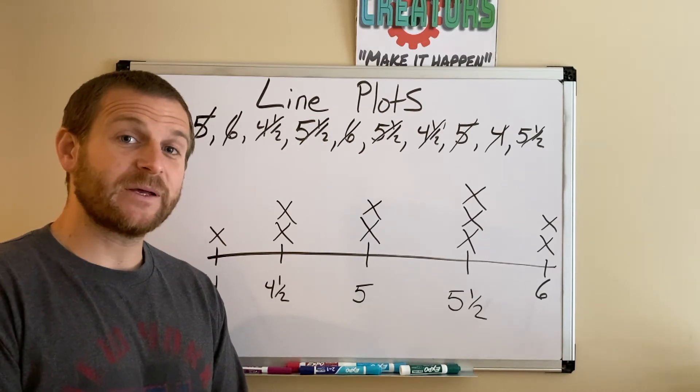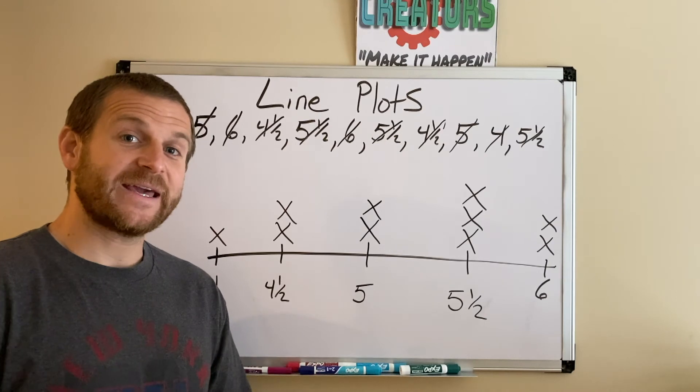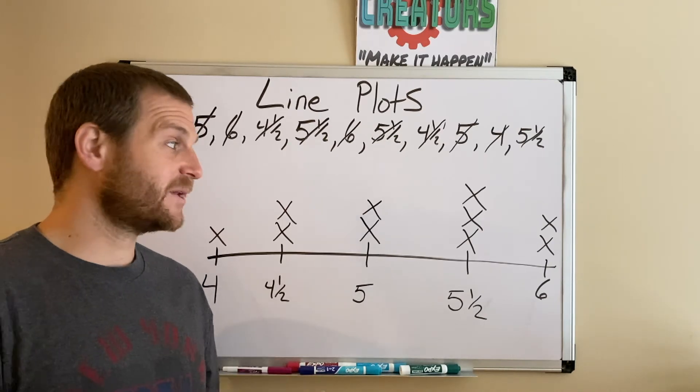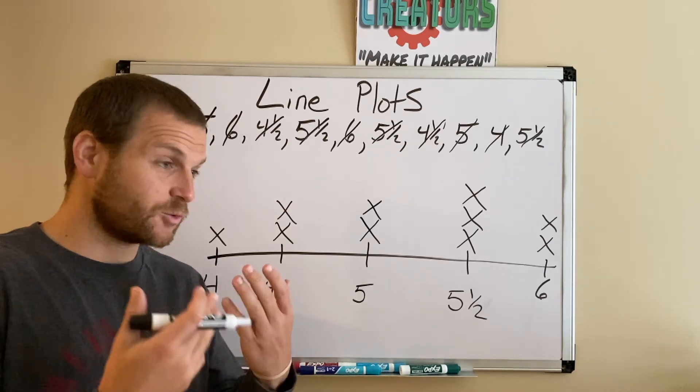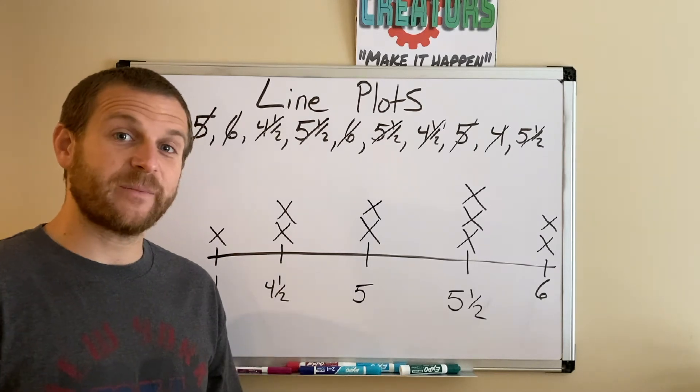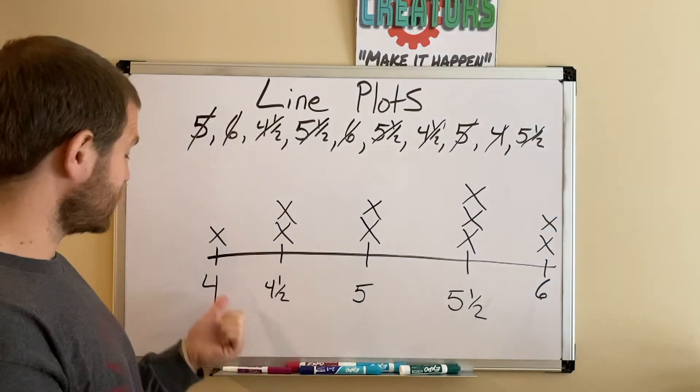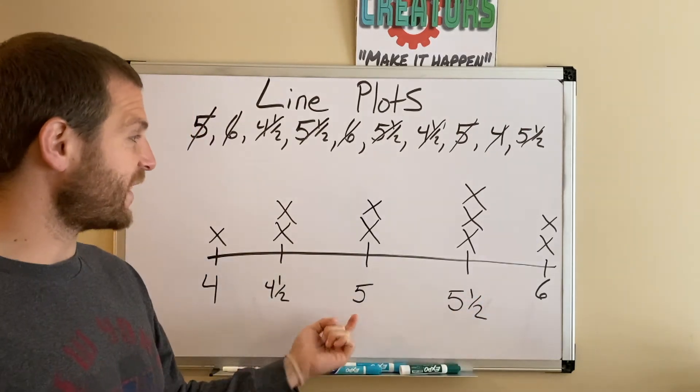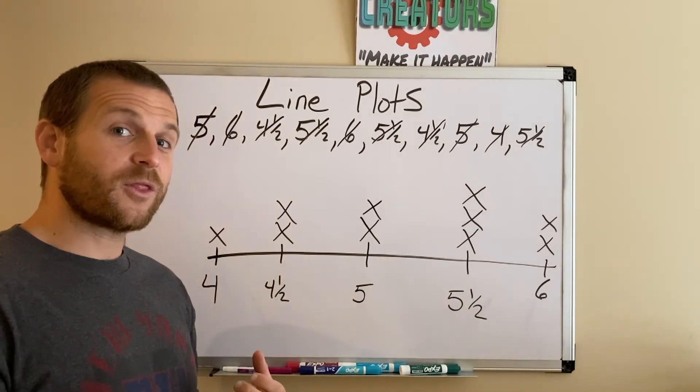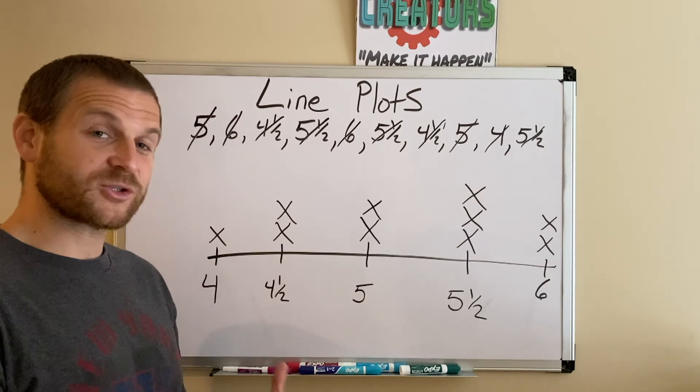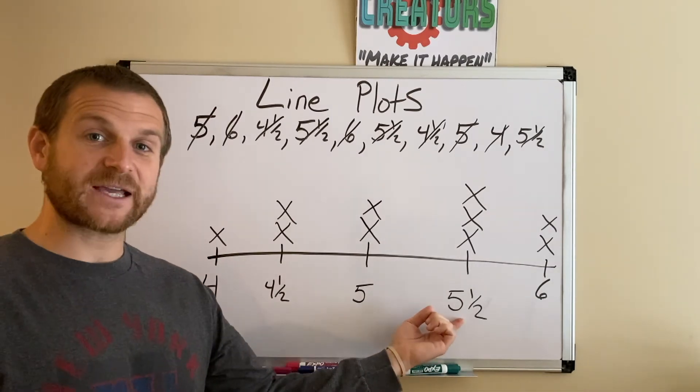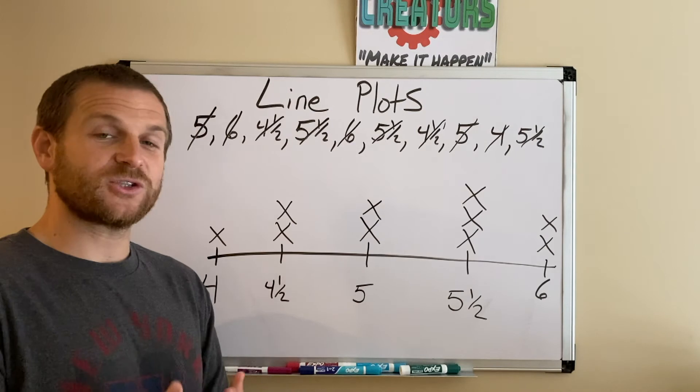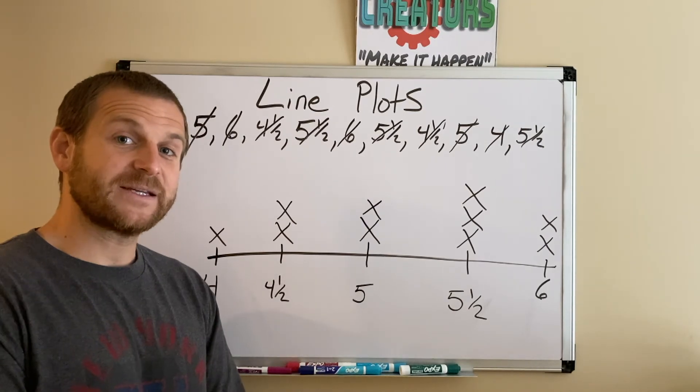Now I can begin to answer questions based on this line plot. A lot of the common questions that come up - the number one question you'll see is what was the most common time that it took students to say the alphabet? As we're looking, it took one person 4 seconds, two people 6 seconds, two people 5 seconds. So the most popular one or the most common one was 5½ seconds. It took the most students 5½ seconds to say the alphabet.